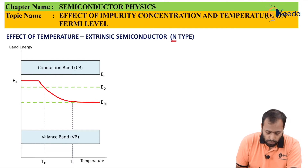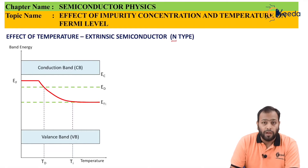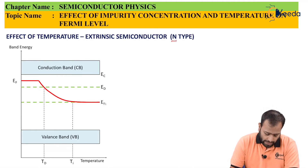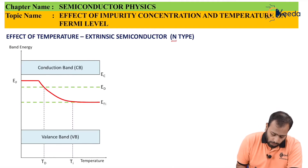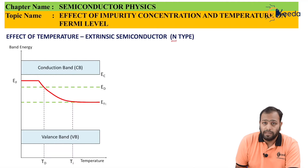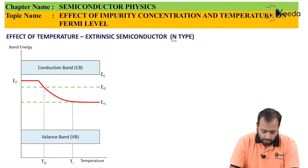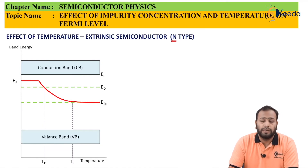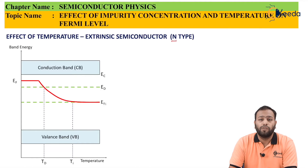Ti is the temperature at which the semiconductor shows intrinsic behavior. At temperatures below Ti, the Fermi level was above the intrinsic Fermi level Efi. But when temperature Ti is crossed, the graph shows the Fermi level equal to Efi. This concludes that at lower temperatures, the extrinsic semiconductor has a higher Fermi level, but after temperature Ti, the semiconductor shows characteristics of an intrinsic semiconductor.